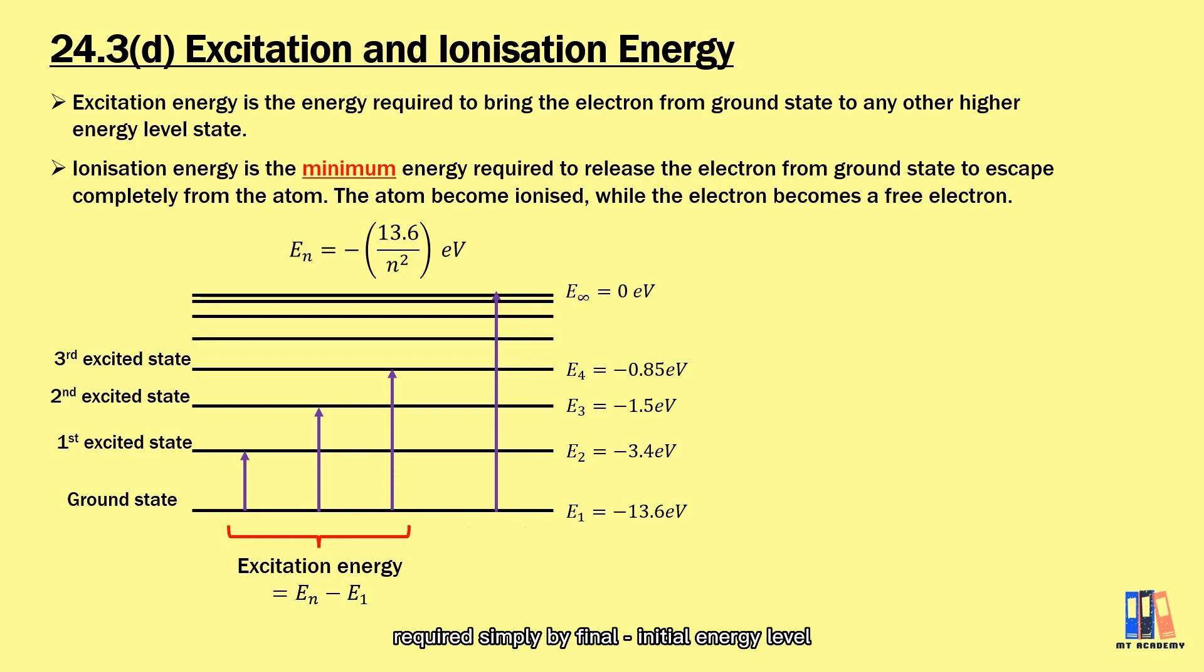The excitation energy depends which level the electron transits to. We can calculate the energy required simply by final minus the initial energy level. For ionization energy, it is the energy needed to fully escape from atom. It will be equal to -E₁.